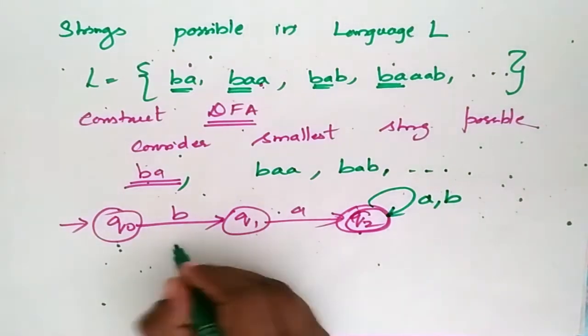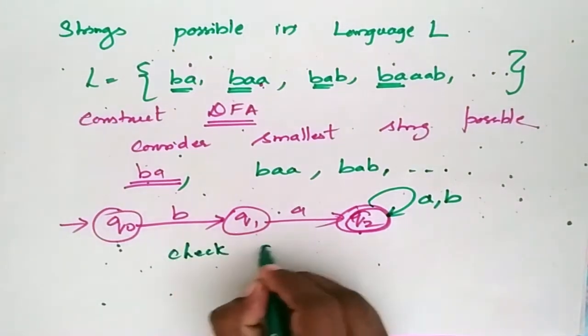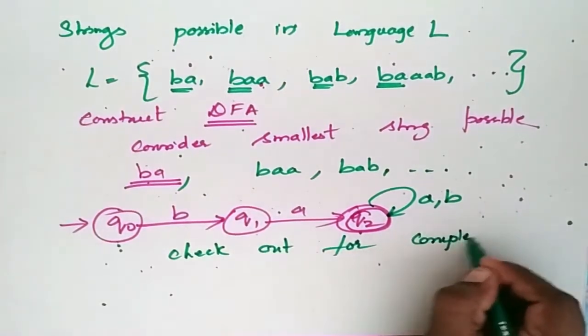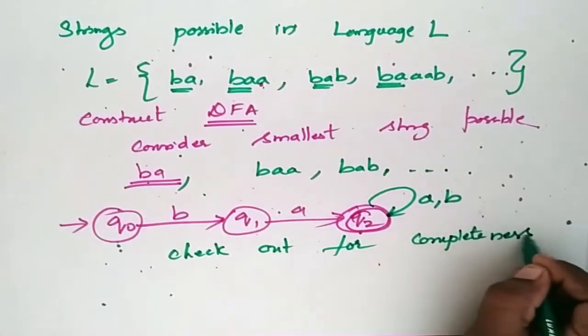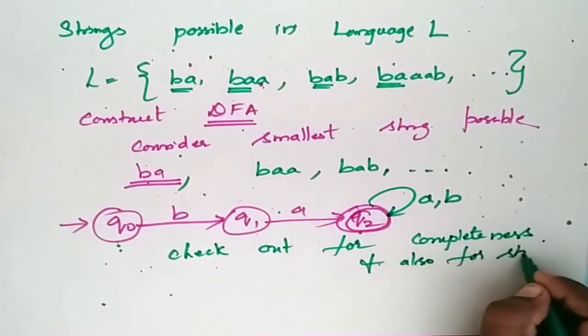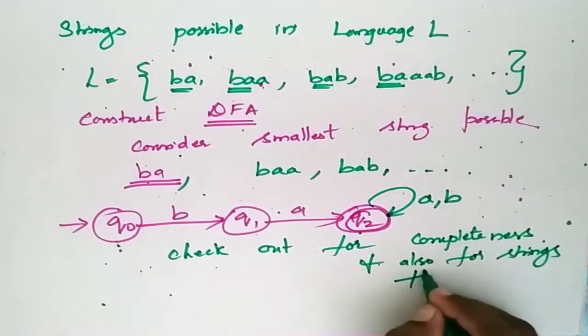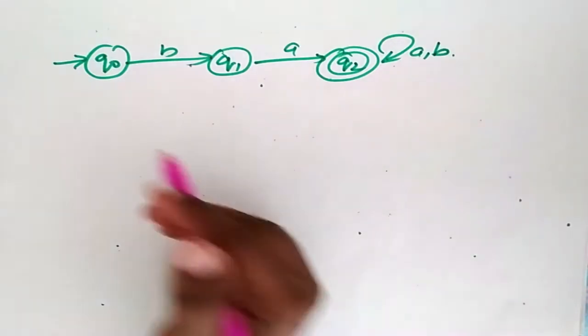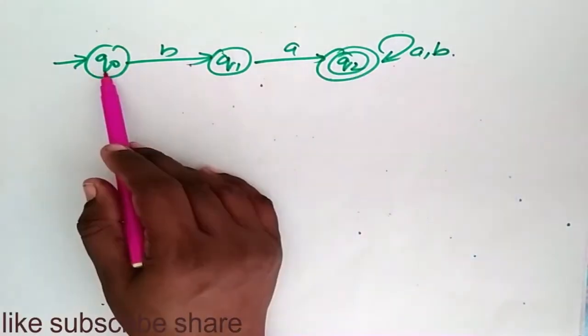Now check out for completeness and also for strings that should not be accepted. Now I have my structure like this.